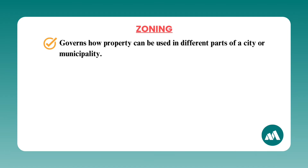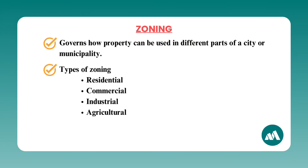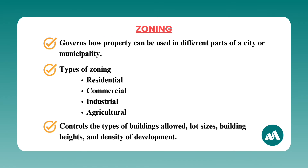Number seven: zoning. Zoning laws govern how property in certain areas can be used — whether for residential, commercial, or industrial purposes. There are several types of zoning including residential, commercial, industrial, and agricultural. Zoning regulations control aspects like the types of buildings allowed, lot sizes, building heights, and density of development. Understanding zoning is very important in real estate as it affects property values and potential uses, influencing investment decisions and guiding buyers and sellers accordingly.